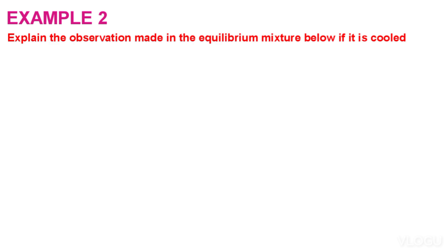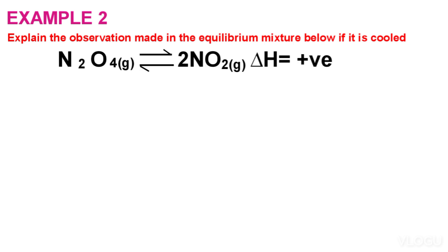Example 2: Explain the observation made in the equilibrium mixture below if it is cooled. The equilibrium is: N₂O₄ (colourless) ⇌ 2NO₂ (brown gas), with a positive enthalpy change.